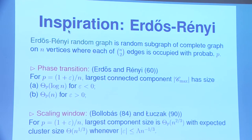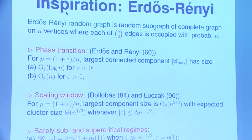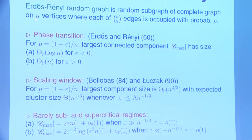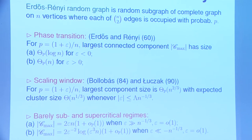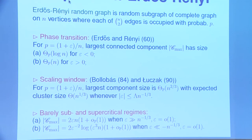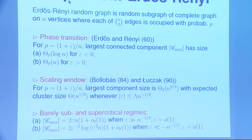Rather than studying the hypercube, you could also study the complete graph, which has no geometry — every two vertices are neighbors. You keep each edge with probability p independently and study the connectivity structure. This is the Erdős-Rényi random graph, also independently invented by Gilbert. Erdős and Rényi discovered a double-jump phenomenon.